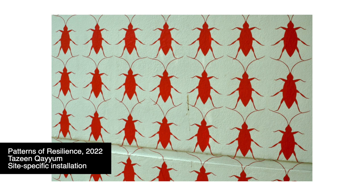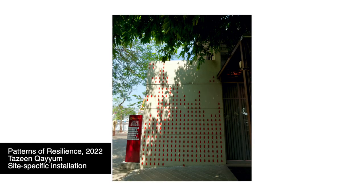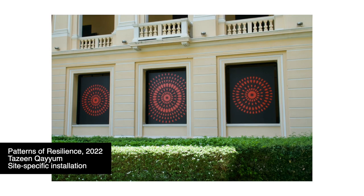These cockroach stickers by Pakistani-Canadian artist Tasrin Kayyam are called Patterns of Resilience, telling stories about surviving — about how immigrants sometimes get treated badly because they are minorities, so they need to stick together for survival.